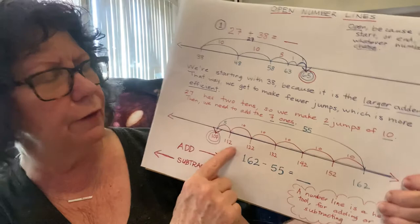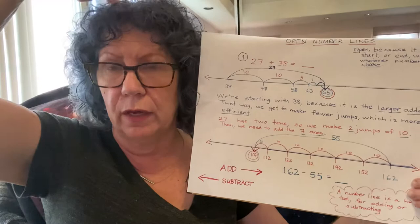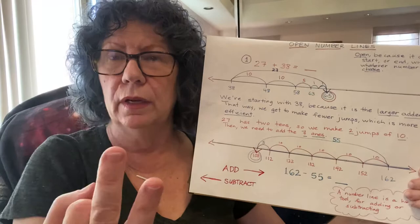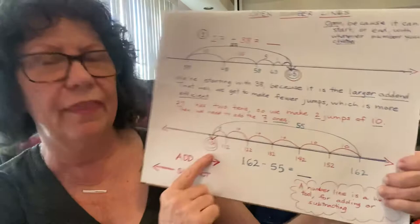So we have made five jumps of 10 to subtract 50. And then we're going to subtract 5. We're at 112. Once again, we can touch our heads, say 112, 111, 110, 109, 108, 107. And that is the difference.